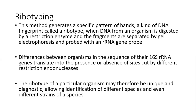The differences between the organisms in the sequence of their 16S rRNA gene translates into the presence or absence of sites cut by different restriction endonucleases. The ribotype of a particular organism may therefore be unique and diagnostic, allowing identification of different species and even different strains of a species.